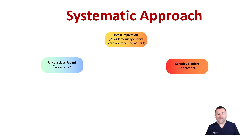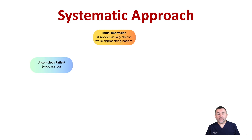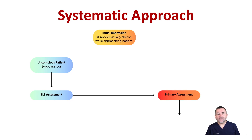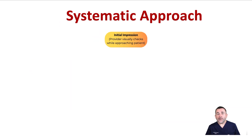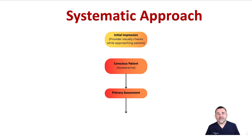When deciding which assessment to use for a patient, start with a step we all do automatically: visually assess if the patient is conscious or unconscious. This is our initial impression of the patient. We can form a rapid general impression by a quick visual assessment of responsiveness, breathing, and color to determine the urgency of the situation. If the patient appears unconscious, use the BLS assessment before progressing to the primary and then secondary assessments. If the patient is conscious, go directly to the primary assessment and then the secondary assessments.